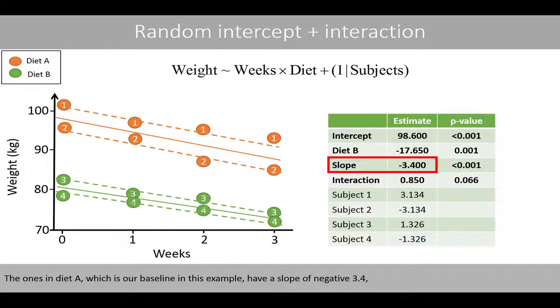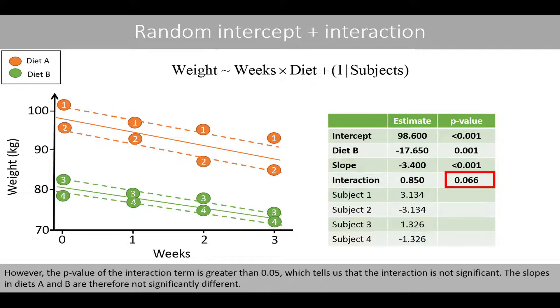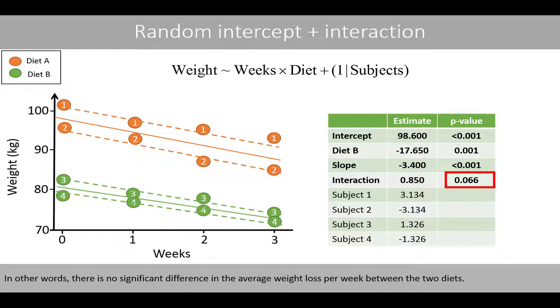The ones on diet A, which is our baseline in this example, have a slope of negative 3.4, whereas the ones on diet B have an estimated overall slope of negative 2.55. However, the p-value of the interaction term is greater than 0.05, which tells us that the interaction is not significant. The slopes in diet A and B are therefore not significantly different. In other words, there is no significant difference in the average weight loss per week between the two diets.